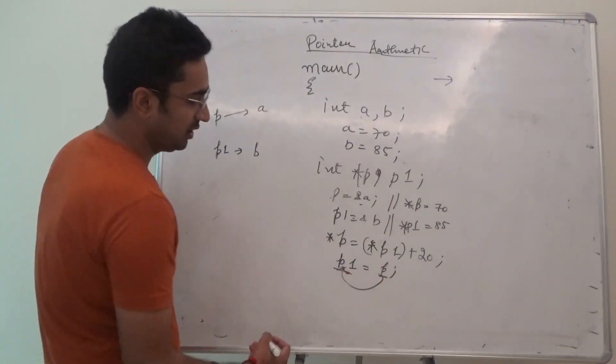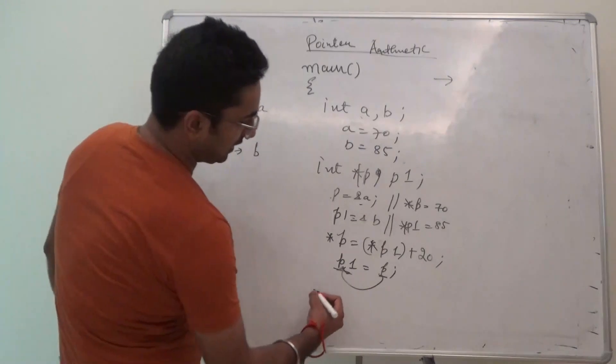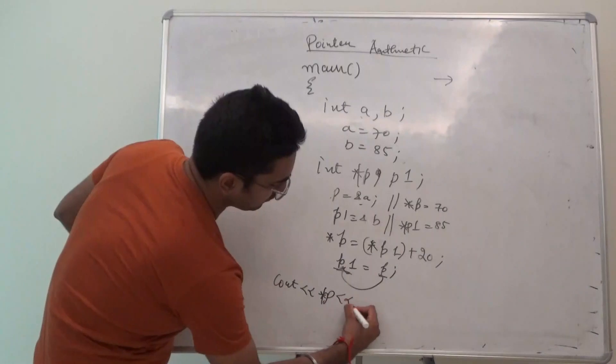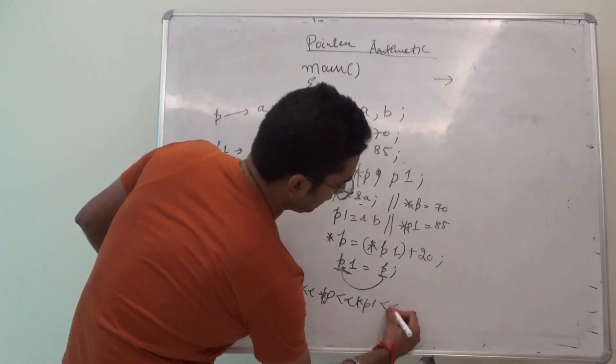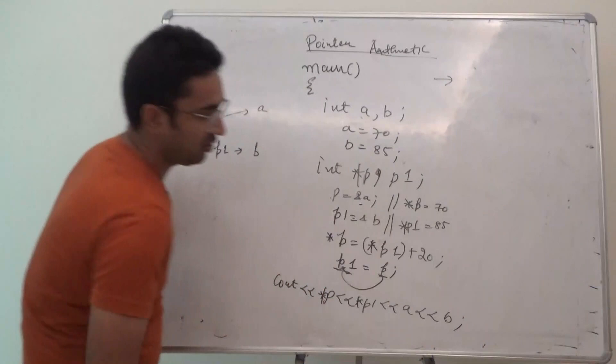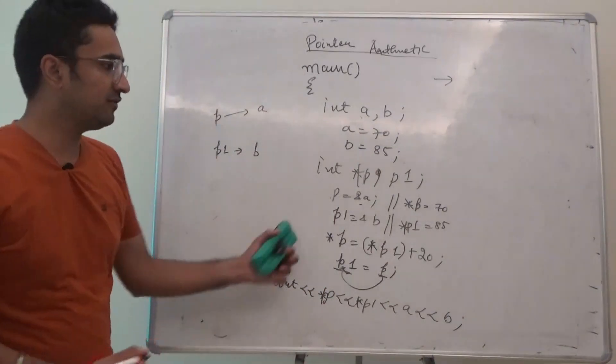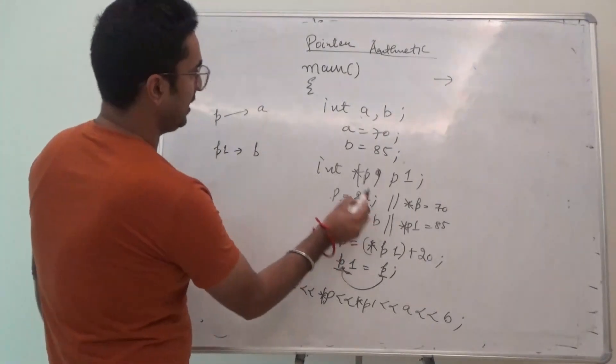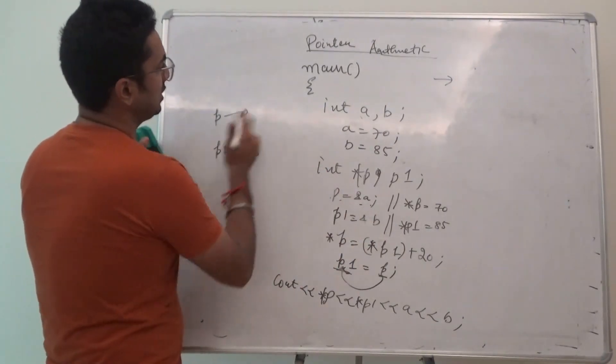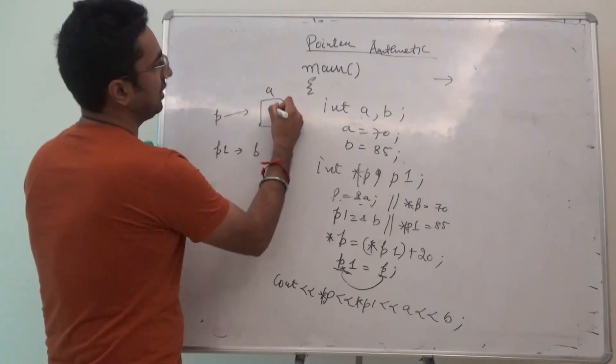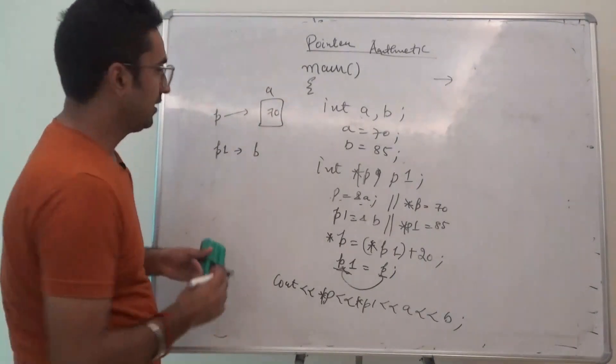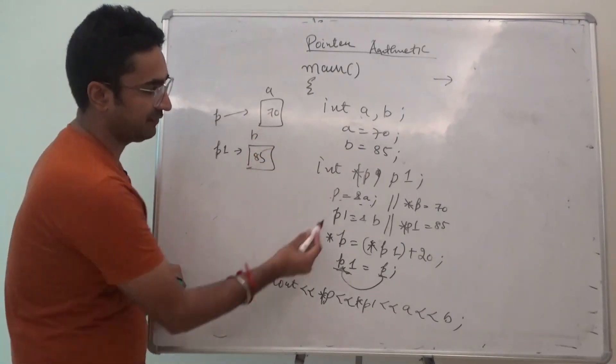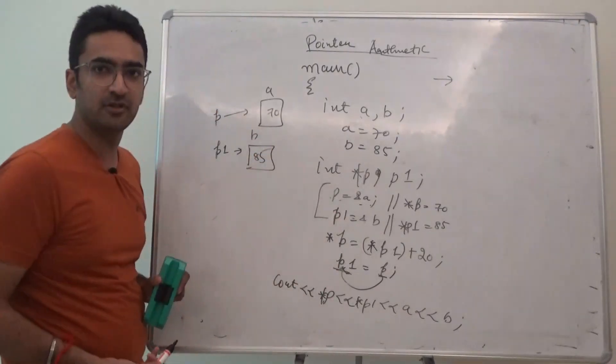So, this is there. And I want to display c out, star of p, star of p1, a and b. Now, I want to display this. So, I want to solve this particular question. You all know, p is pointing towards a. So, p is pointing towards a and a value is 70. Right? And p1 is pointing towards b and b value is 85. Right? These answers are absolutely fine.